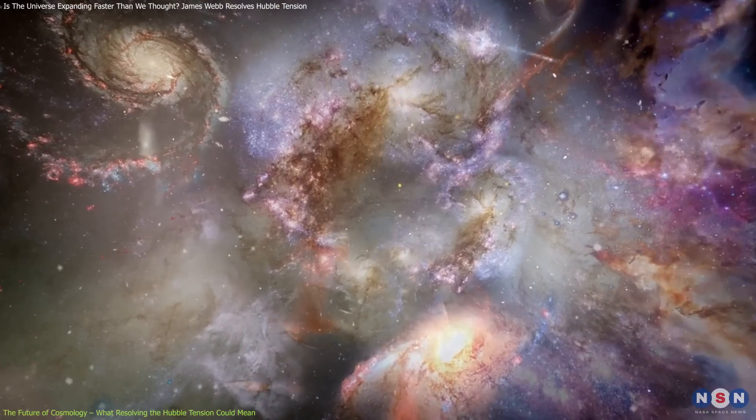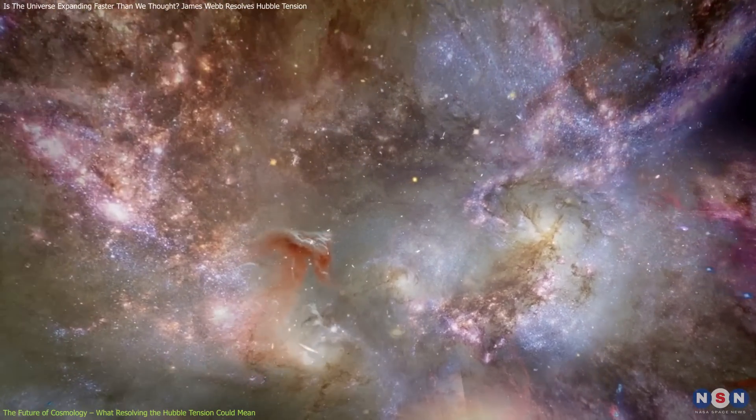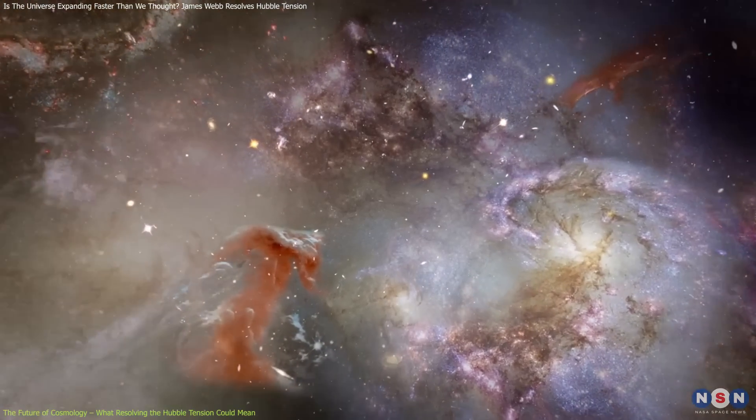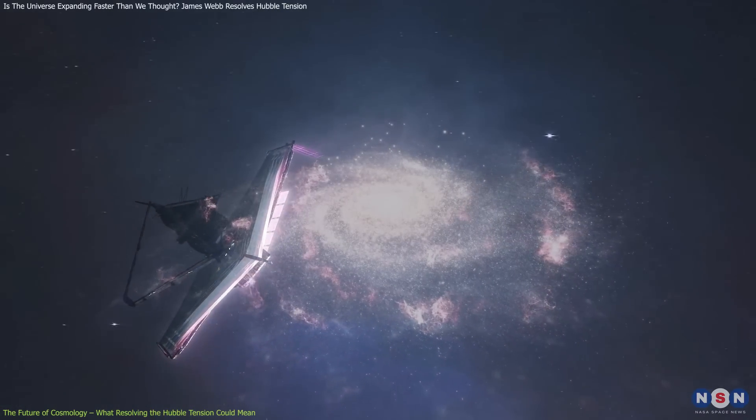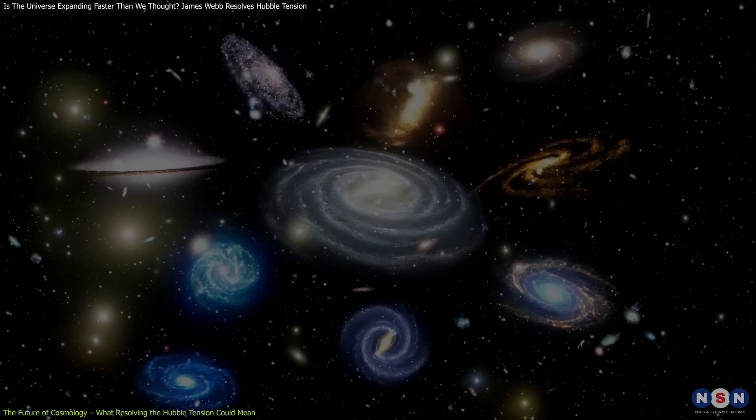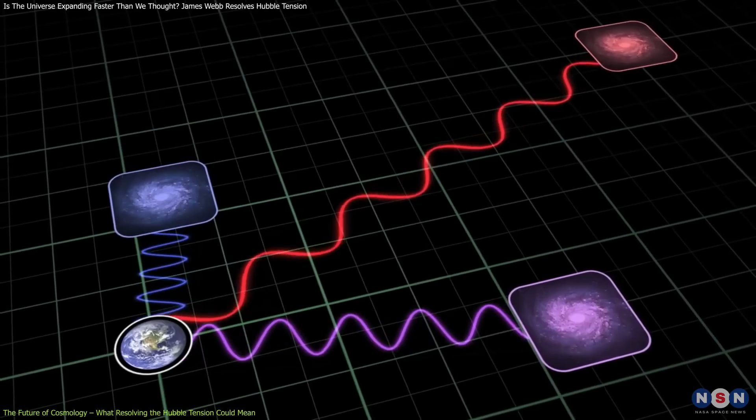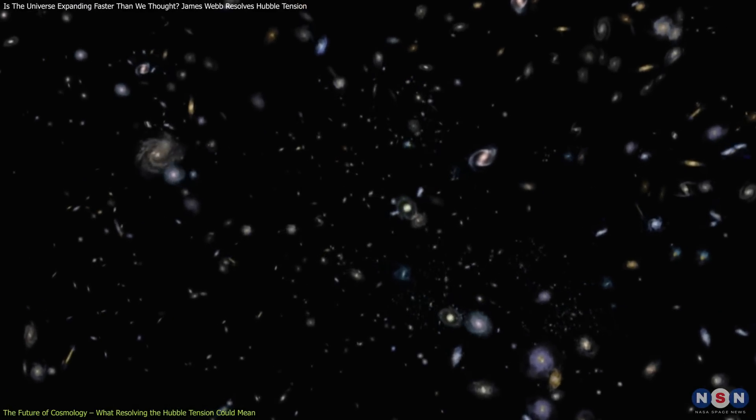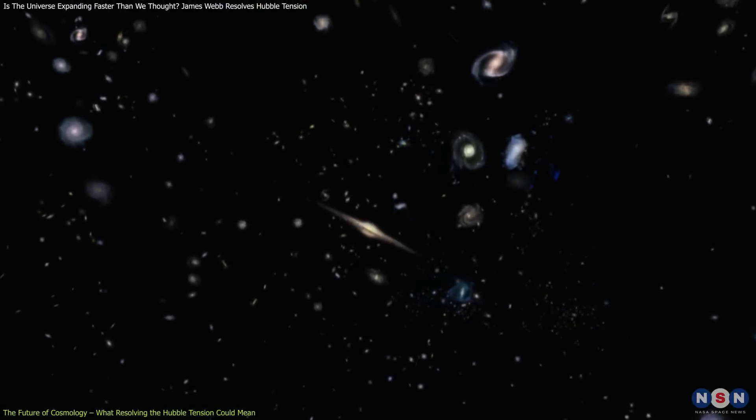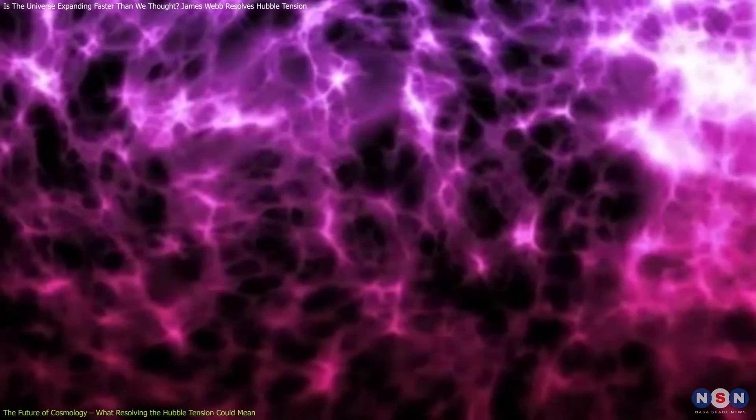Another possibility is that the tension arises from an incomplete understanding of how cosmic structures like galaxies and clusters have evolved over time. Webb's ability to observe galaxies at different stages of their evolution, from the early universe to the present day, will provide critical data for testing these ideas. By comparing the properties of galaxies at different distances, astronomers can build a more detailed picture of how the universe's expansion has changed over time, potentially revealing new insights into the nature of dark matter, dark energy, and the underlying structure of spacetime.